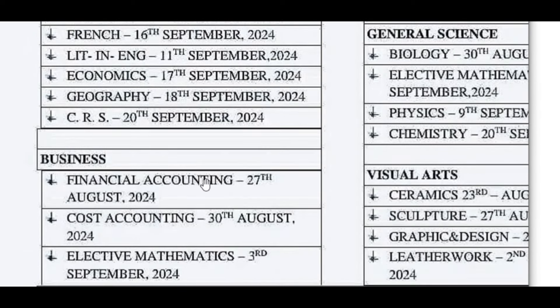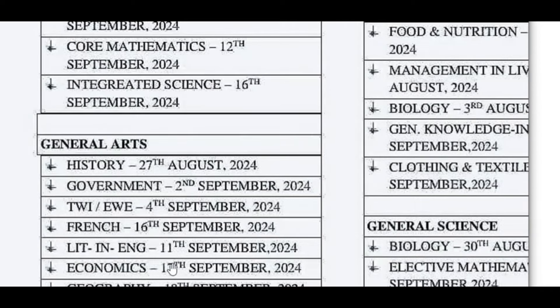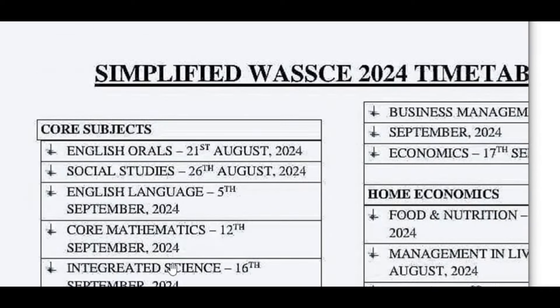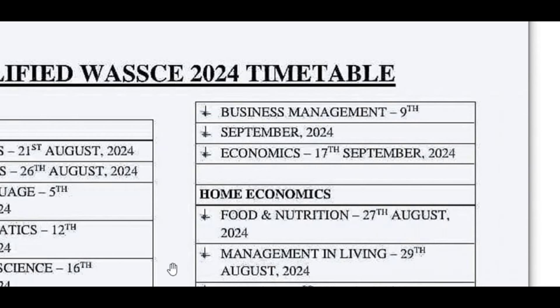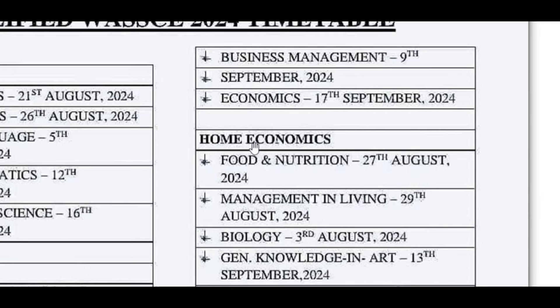For Business students: Financial Accounting — 27th August 2024; Cost Accounting — 30th August 2024; 18th September 2024. The timetables are in the school — you can download one from the official WAEC page or check the one provided in the school. Business Management — 9th September 2024; Economics — 17th September 2024.